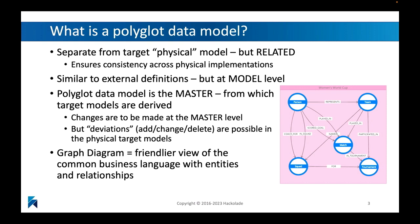We're going to use something similar to external definitions — linking things together, referring from one model to another at the model level. It's important to understand that once you start using the polyglot data model, it will become the master from which all target models are derived. Changes are to be made at that master level as much as possible. We will accommodate deviations, additions, changes, and deletions, but think twice when you do. You probably want to maximize the number of changes at the master, at the polyglot level.